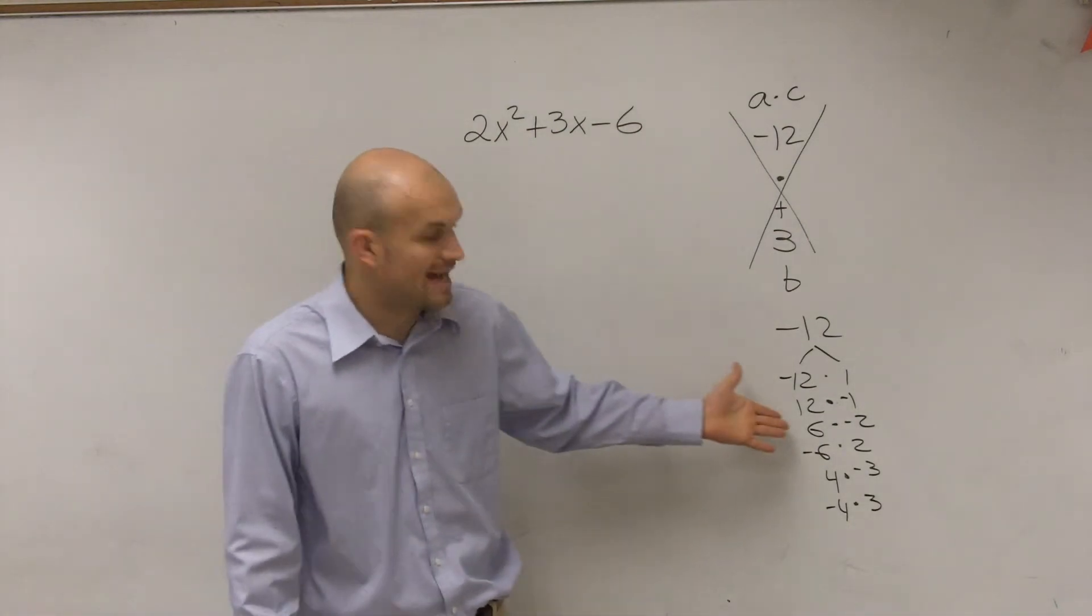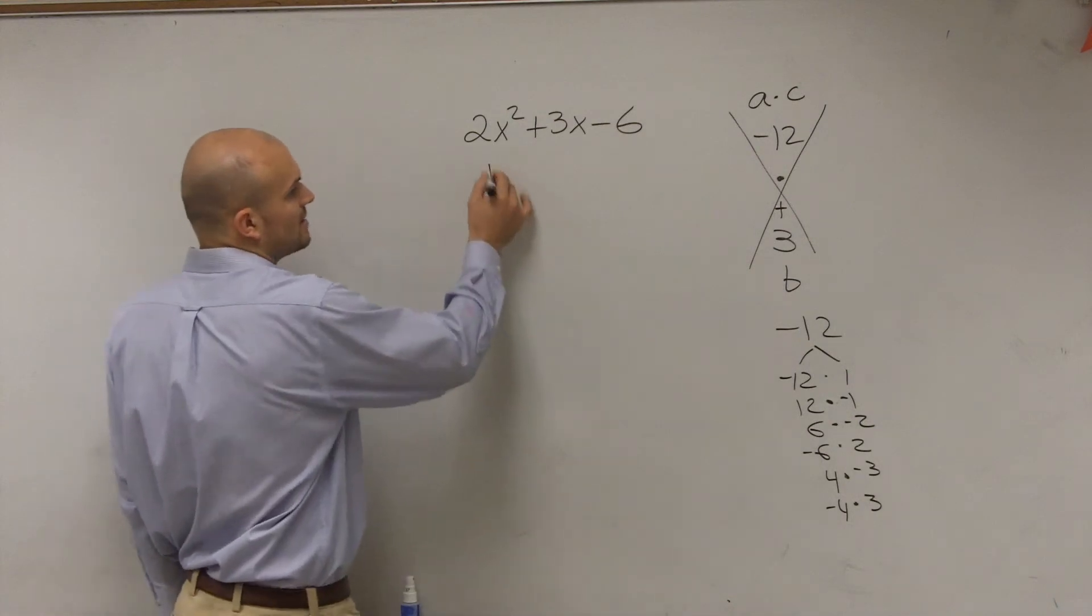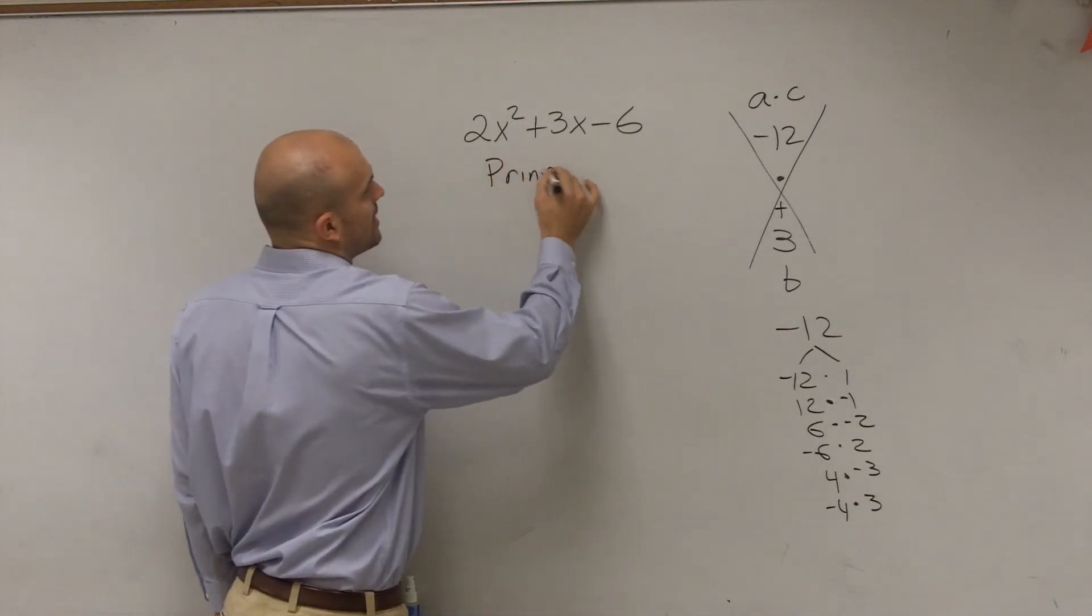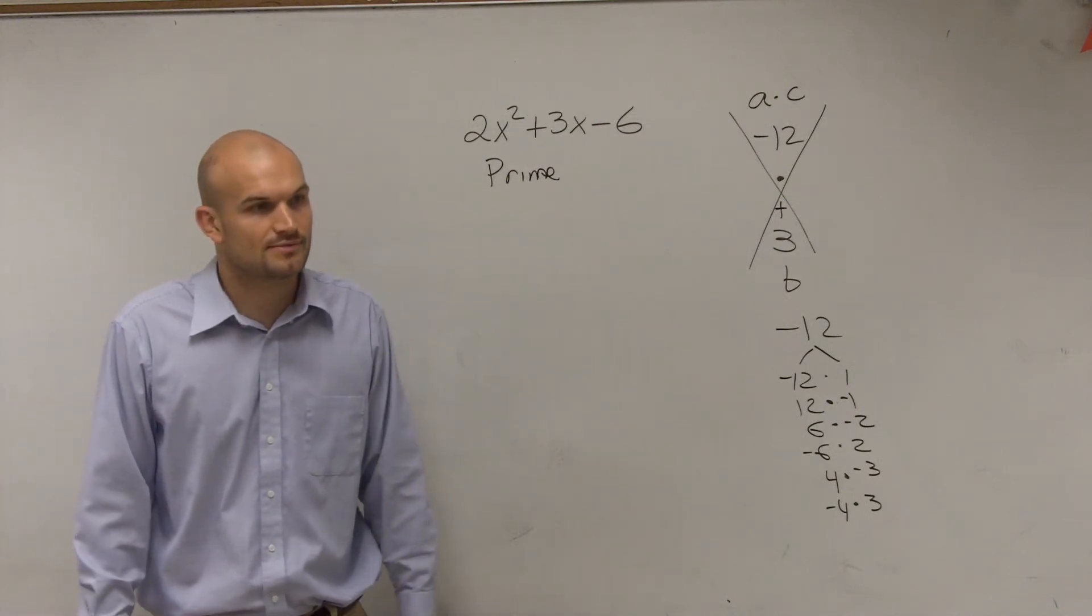Okay, so let's look at it. Do any of these add up to give you negative 3? No. So, therefore, we can simply say that this is going to be prime. I mean, it cannot be factored evenly as we worked it. Okay?